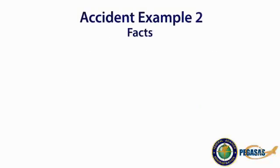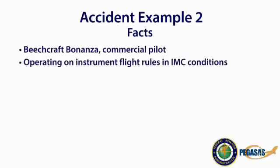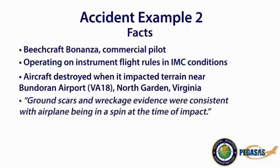In the second accident case study, the aircraft was a Beechcraft Bonanza B-36TC flown by a commercial pilot. It was operating on instrument flight rules in IMC conditions. The aircraft was destroyed when it impacted terrain near Bundaran Airport, North Garden, Virginia. Ground scars and wreckage evidence were consistent with the airplane being in a spin at the time of impact.